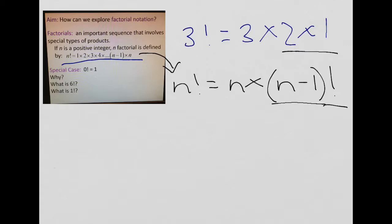If we were talking about 5 factorial, then this would be 5 times 4 factorial, which is 5 times 4 factorial, which is 4 times 3 times 2 times 1. So this is another way to write n factorial.